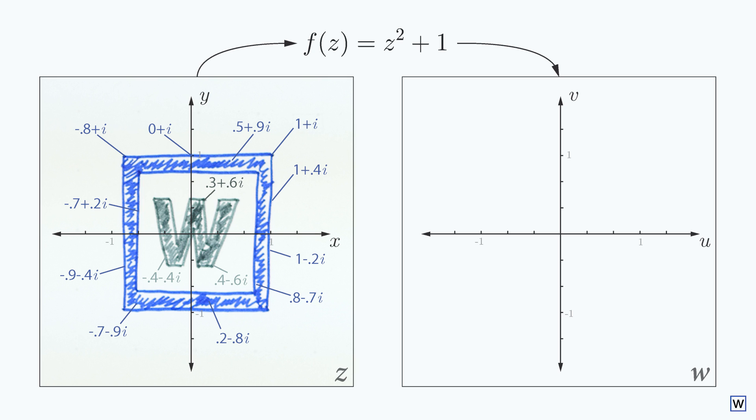Our code will move points exactly as we did by hand before. If we have a blue pixel at the 1 plus i location on our input graph, then this blue pixel will be moved to the 1 plus 2i location on our output graph, because f is equal to 1 plus 2i.